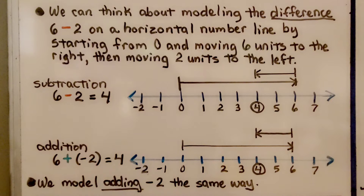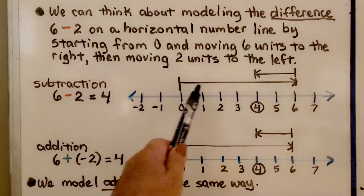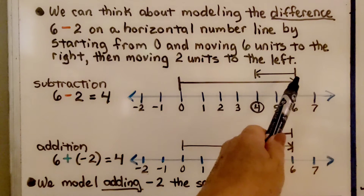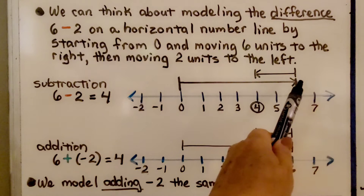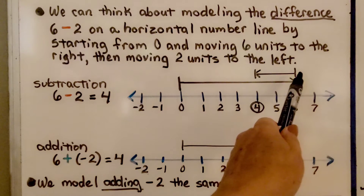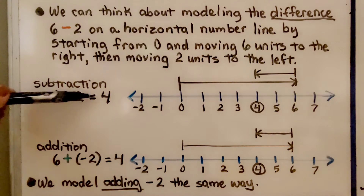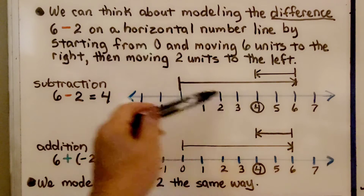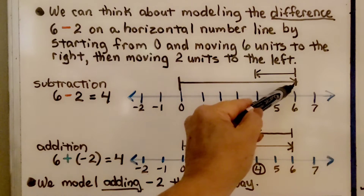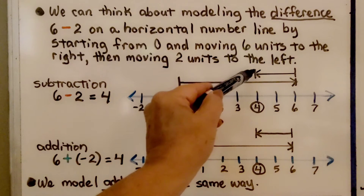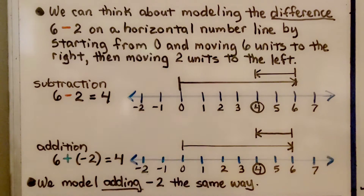We can think about modeling the difference 6 minus 2 on a horizontal number line by starting from 0 and moving 6 units to the right. Then for the minus 2, we move 2 units to the left. So that would just be regular subtraction — 6 minus 2 is equal to 4. We went from 0 to 6, then went back 2, and that brought us to positive 4.